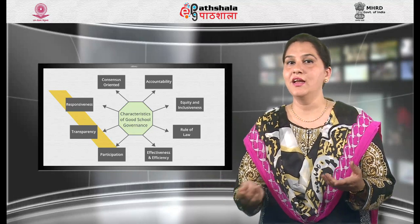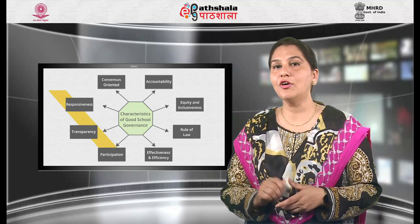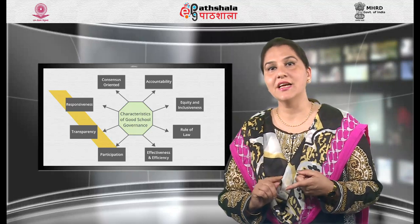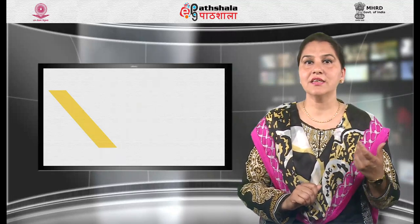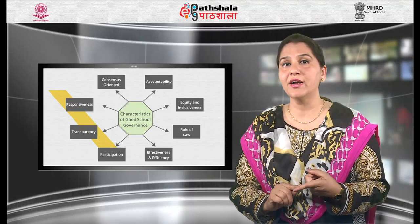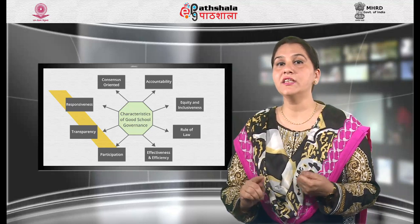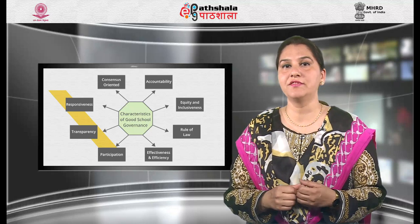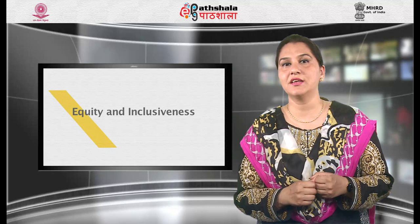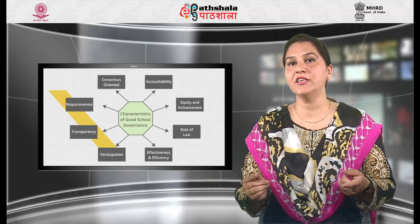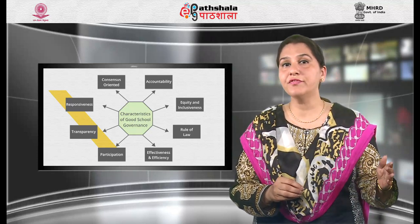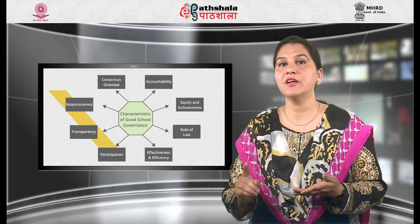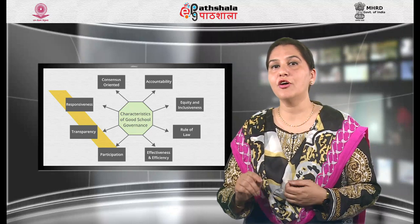Fourth is responsiveness. Good school governance requires that school organs and processes try to serve all stakeholders, especially parents, teachers and pupils, within a reasonable time frame. Fifth is consensus oriented. Good school governance requires mediation of different interests in the school to reach a broad consensus on what is in the best interest of the whole school community and how this can be achieved. Sixth is equity and inclusiveness — ensuring that all members of the school community feel that they have a stake in it and do not feel excluded from any mainstream.